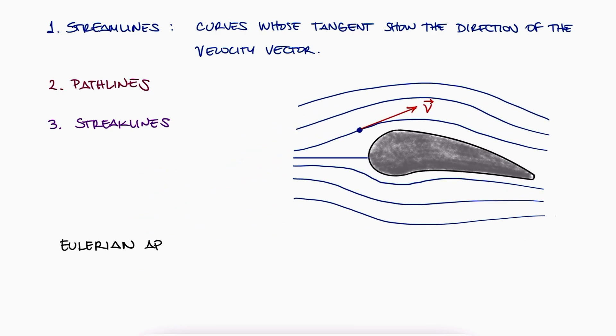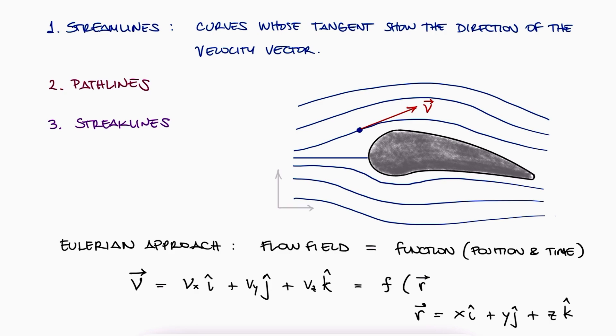The Eulerian description of a flow field defines the flow as a function of location and time. In other words, if we're using an Eulerian method to describe our flow field, we would have a velocity function, obviously a 3D vector field V, that gives us information about the velocity in all three dimensions, that depends on the location we're looking at, also in three dimensions, relative to our coordinate system, and the time value t.